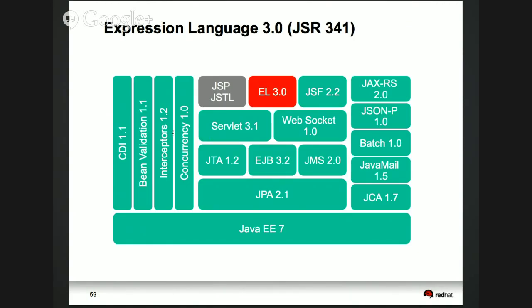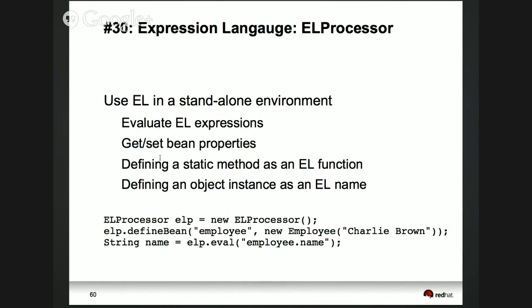EL 3.0, JSR 341, is now a standalone specification. EL was always existing as part of JSP and used in JSF, but now it's independent. The concept is an EL processor: you spin up a new EL processor and use it to write configuration files that do expression language resolution — resolving a particular bean to a particular class name. This capability is not limited to JSP or JSF; you can use it for your configuration files as well.